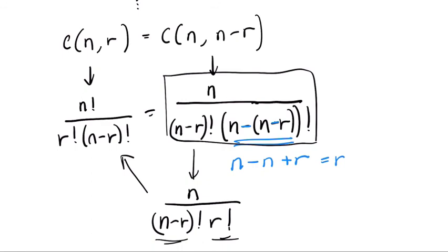However, these two terms are just in opposite order, and the commutative property allows us to reverse them. Factorial there. And a factorial there, sorry.